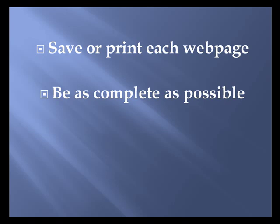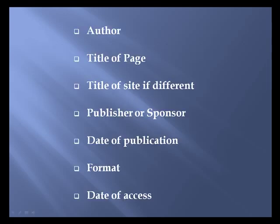Second, citing an online source can be tricky, and the information you need is sometimes difficult to find. Aim to be as complete as possible with the information that's available to you. If a piece of information such as the author or date isn't there, consult your style guide for directions on how to handle this. Third, when creating citations, especially for websites, you sometimes need to improvise by combining elements from different patterns, such as a book pattern combined with a website pattern. Aim to be consistent, citing each similar type of item in the same way.